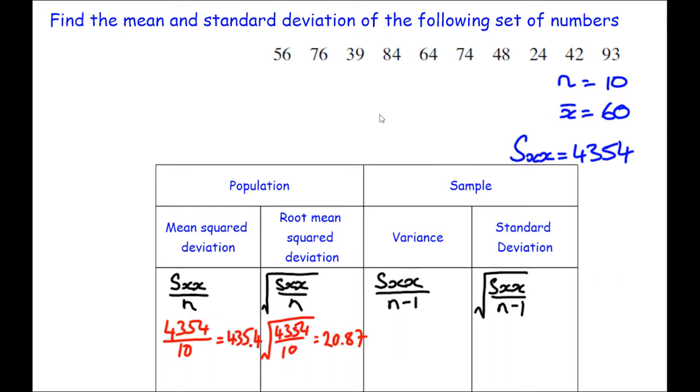We'll go ahead and do similar calculations. So this time 4,354 all divided by 9. So that's my n minus 1. This may be 483.78 if we're going to two decimal places.